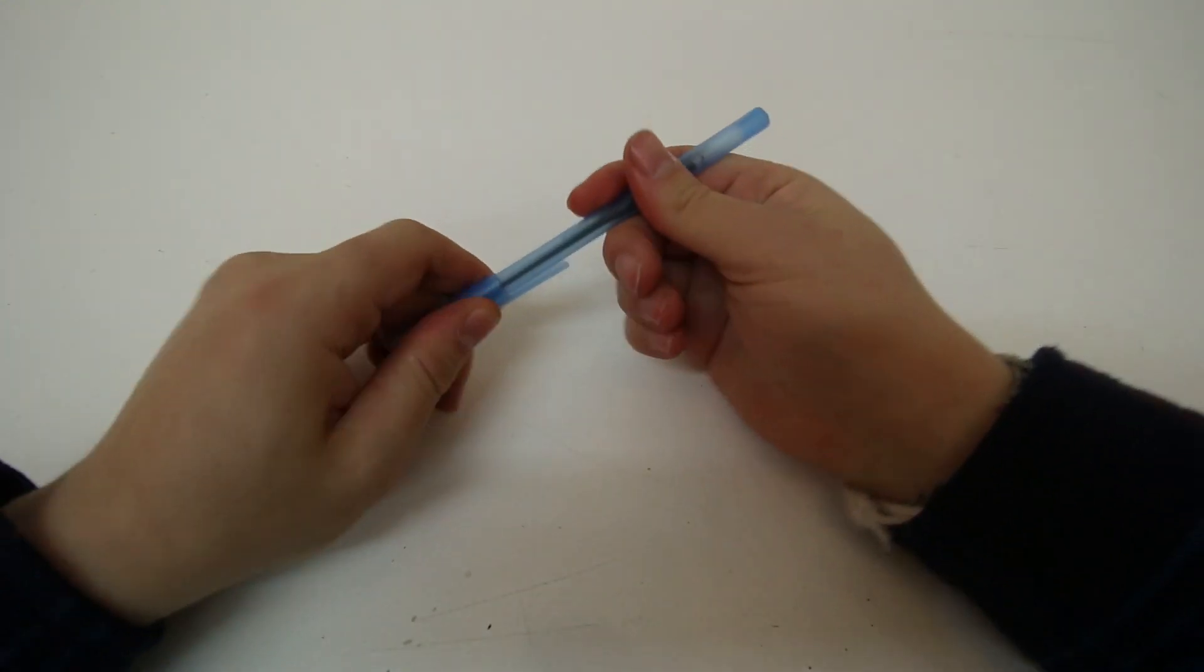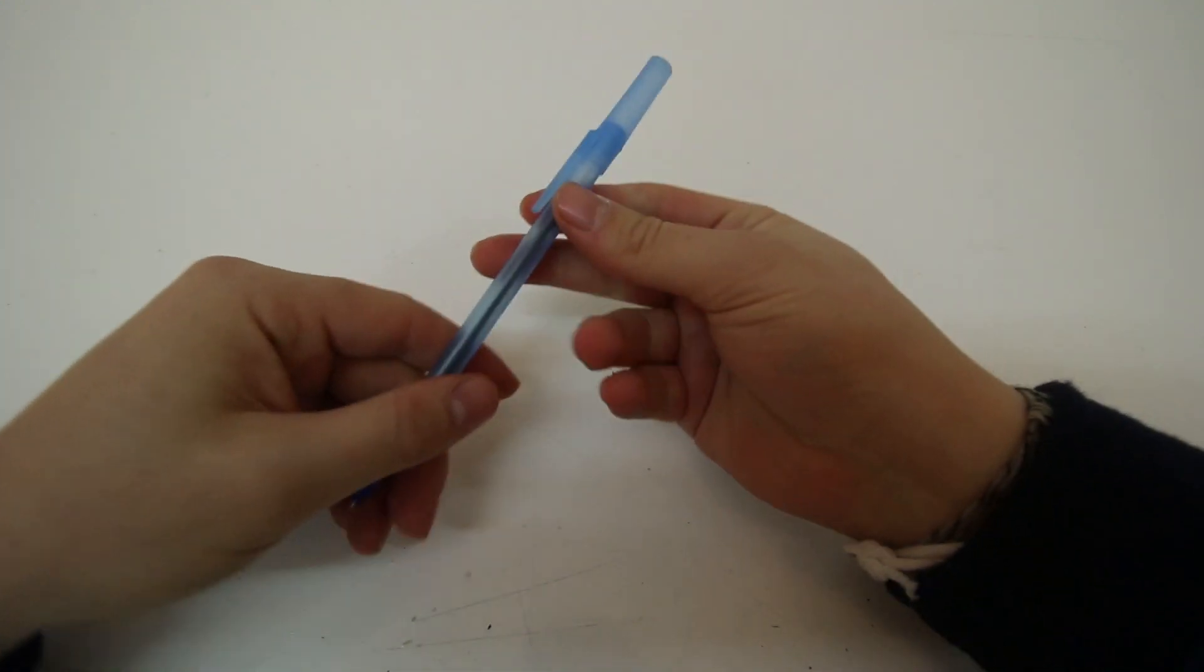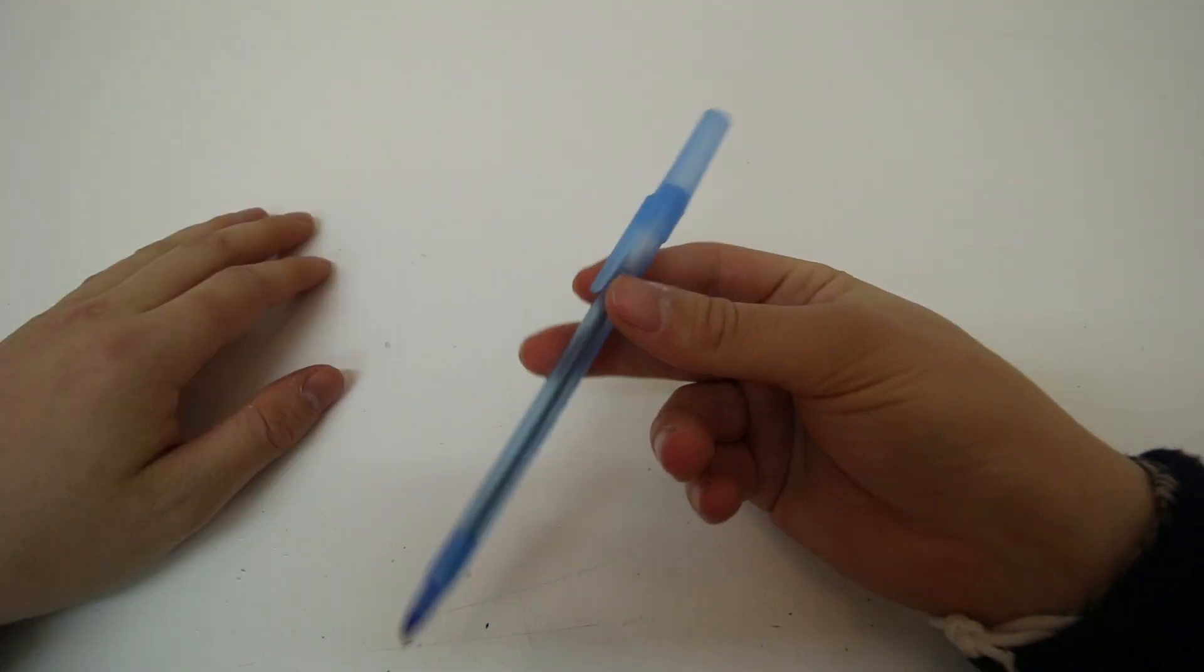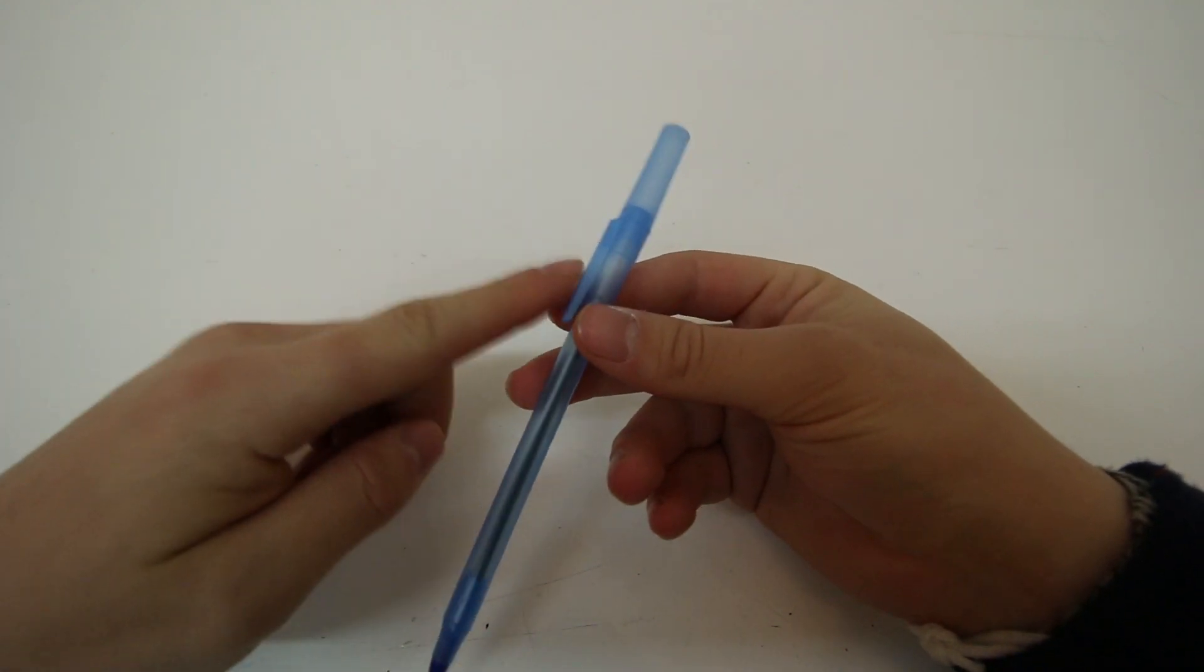Take an ordinary pen and put the cap on the blunt end. Hold it with your thumb, index, and middle fingers like this, sort of like a claw near where that little stick ends.